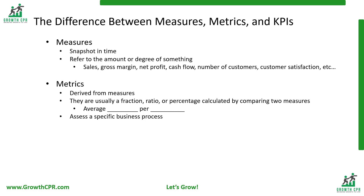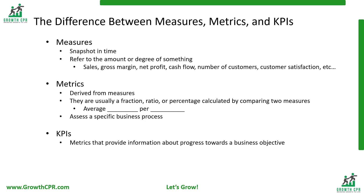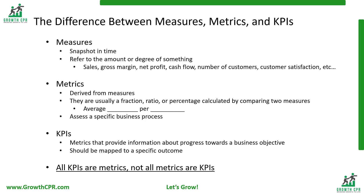Metrics are things like inventory turnover, customer lifetime value, budget versus actual performance, and employee turnover, as well as job satisfaction. KPIs are metrics that provide information about a company's progress towards a business objective and should be mapped to a specific outcome. While all KPIs are metrics, not all metrics are KPIs.